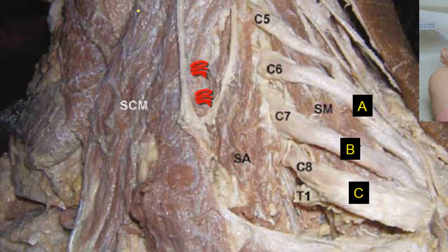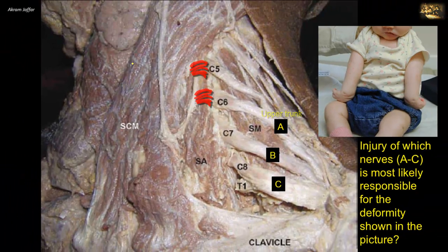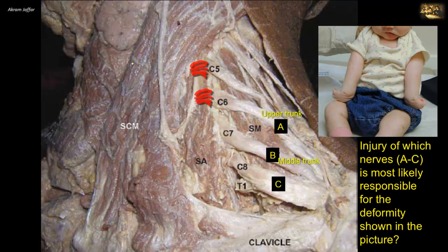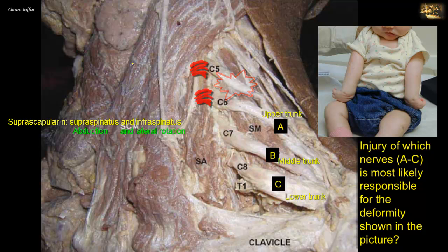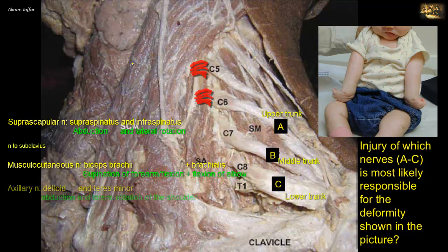The roots from C5 to T1 are visible. C5 and C6 roots form the upper trunk, C7 forms the middle trunk, and C8 and T1 form the lower trunk of the brachial plexus. These roots are located between scalenus anterior and scalenus medius muscles in the posterior triangle of the neck. The suprascapular nerve arises from the upper trunk. Other nerves containing fibers from C5 and C6 are also affected, such as the nerve to subclavius, though the more important ones are the musculocutaneous and axillary nerves.